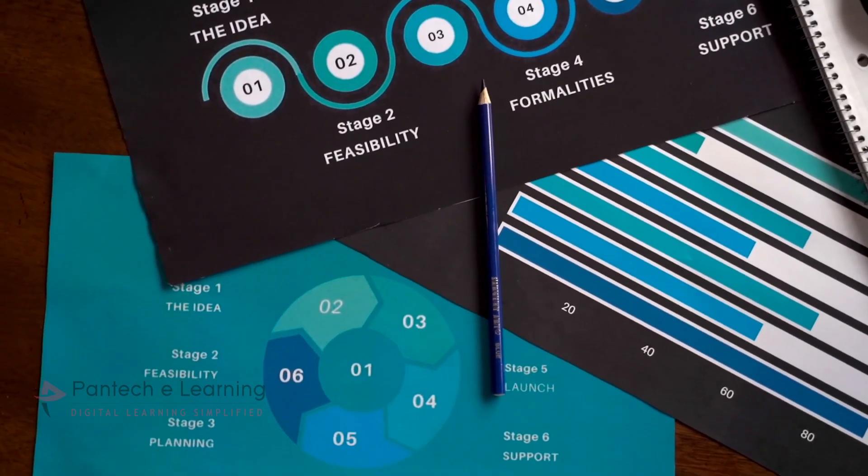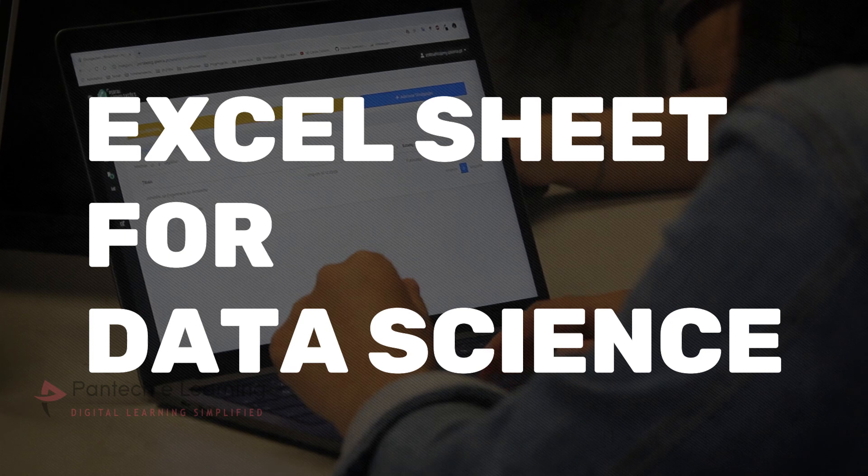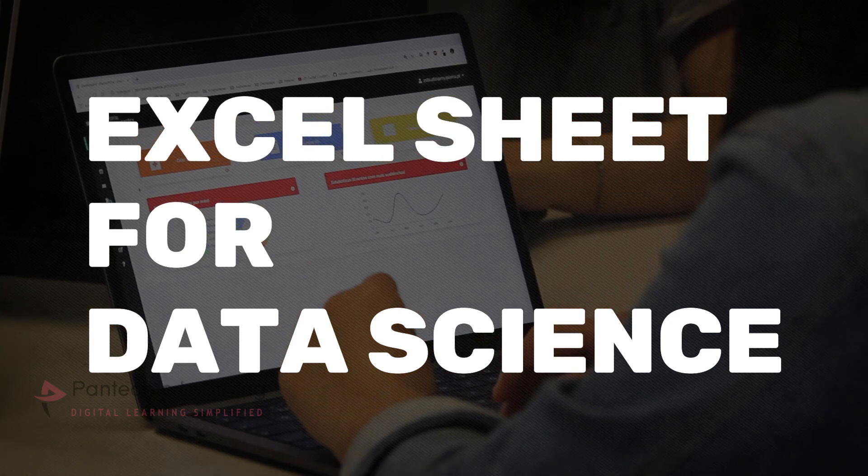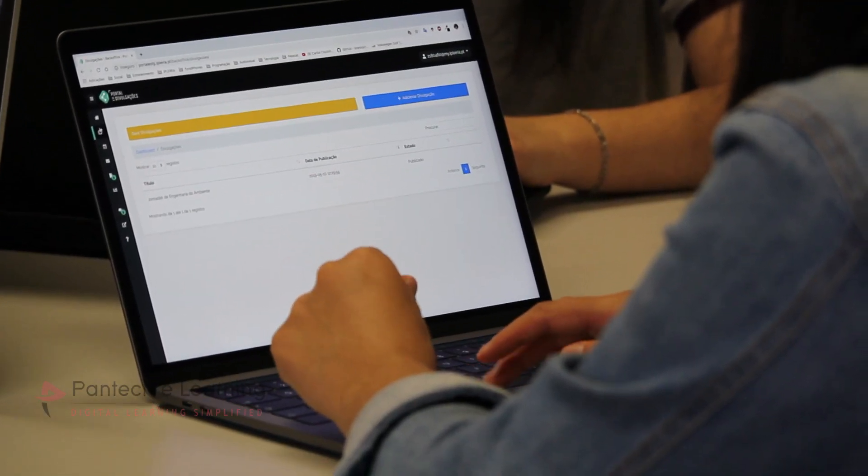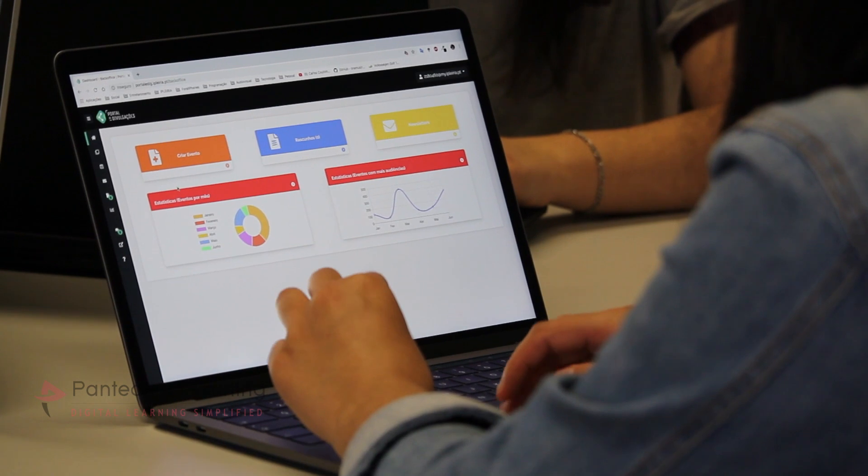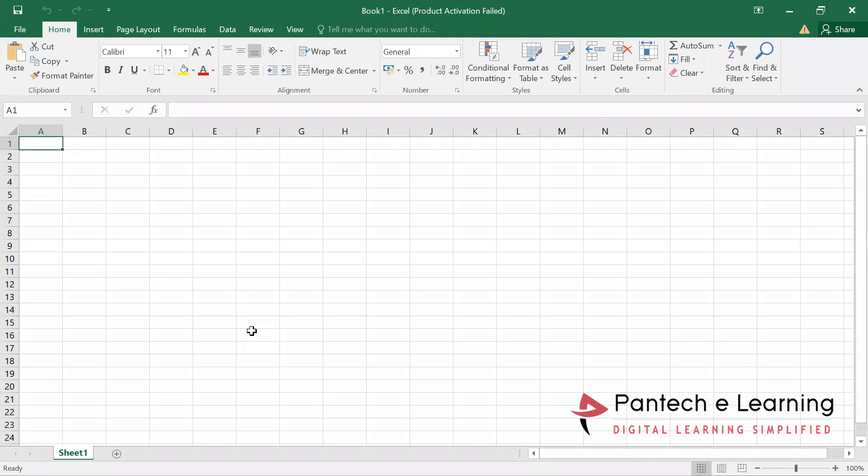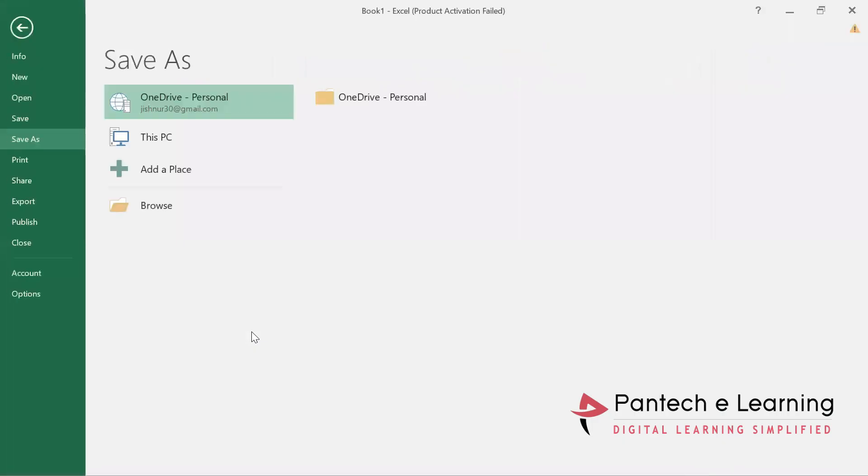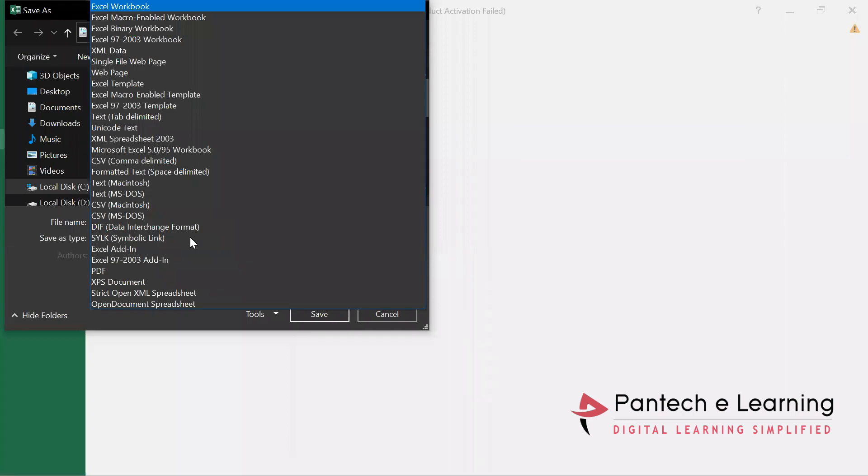So for this kind of collecting data or storing data, the most important software is nothing but our Excel sheet. From the Excel sheet, we will be able to create multiple data. I'm going to show you how to turn the complete data into a kind of raw data. Whenever I'm opening the Excel sheet, this is that particular Excel sheet which many have used for many kinds of purposes.